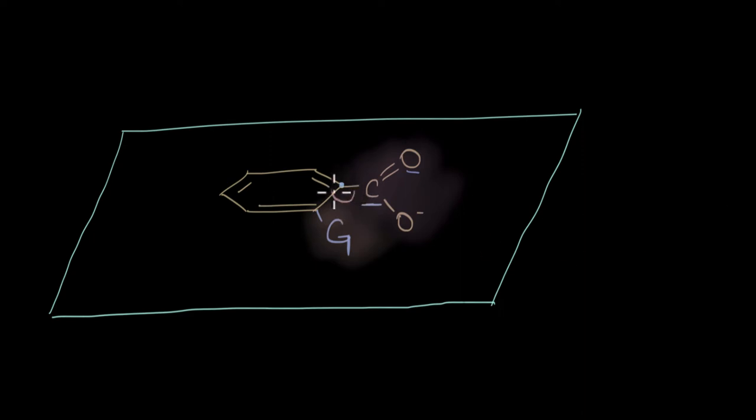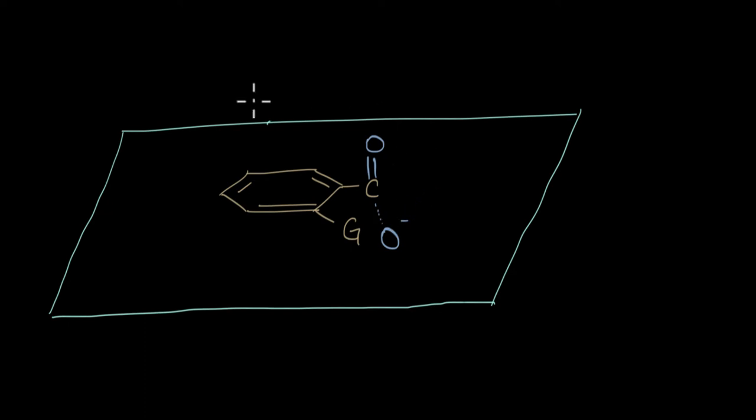The resulting carboxylate ion shows that the oxygen protrudes out of the plane and the other oxygen is downwards to the plane.